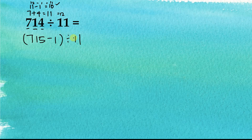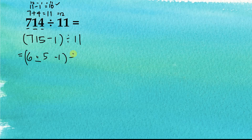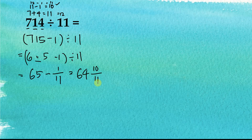Now, 715 divided by 11: we split this into parts. The first digit becomes 6, the second becomes 11, and the last digit is 5, giving us 65. Then we have minus 1 divided by 11, which is negative 1 over 11. Therefore the result is 64 and 10 over 11, which as a decimal is 64.90 recurring.